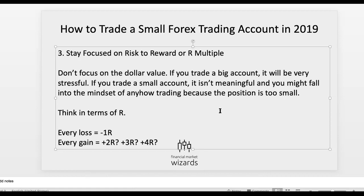Start small and start right. Don't focus on the dollar value — instead, think in terms of R. Every loss you see as just a 1R loss, without the dollar sign. And if you gain, depending on your trade, it's a 2R, 3R, or 4R gain. This way, when you trade a bigger account, it stays the same — your loss is still 1R, your gain is still 2R — and that helps to keep your trading psychology in check.